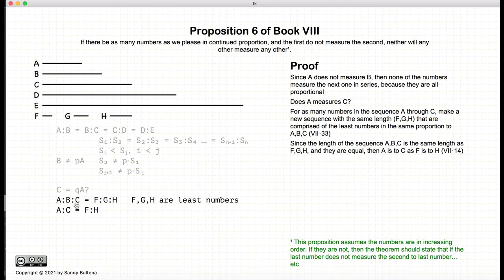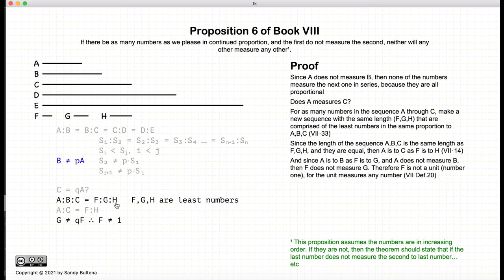So because this continuous ratio are equal, we have that A to C is equal to F to H, and that's from Proposition 14 of Book 7. Now we know that A does not measure B, and A to B is equal to F to G. So F does not measure G.